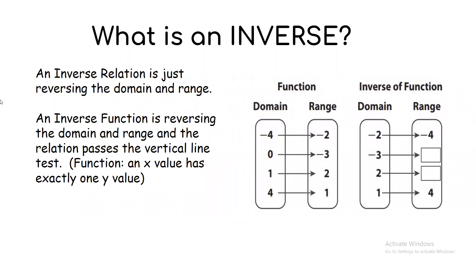If we know what a function is, then what is an inverse? An inverse relation is just reversing the domain and the range. An inverse function is that reversed relation that also passes the vertical line test — meaning each x value still has exactly one y value.